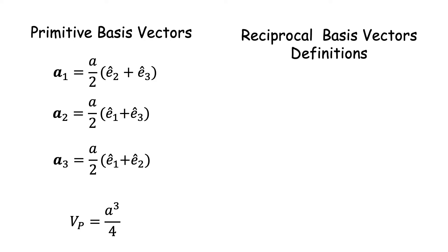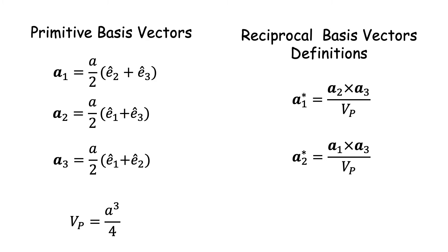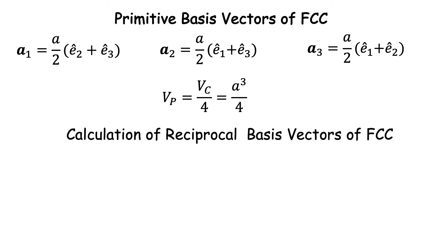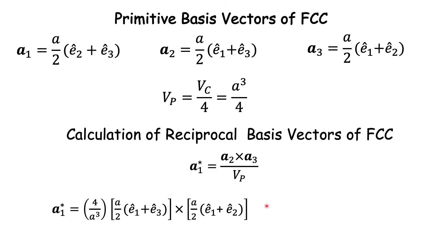The definition of the reciprocal basis vectors is: A1* = (A2 × A3) / Vp, and similar definitions for A2* and A3*. In these definitions, note that A1, A2, and A3 are primitive vectors of the given lattice — that was the need to find the primitive vectors of the FCC lattice. So we now have the three basis vectors of the primitive FCC lattice, the unit cell volume, and the definition of the reciprocal lattice vector. All we have to do now is substitute these values into the formula to calculate A1*.